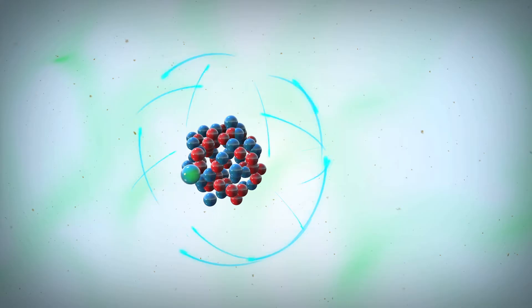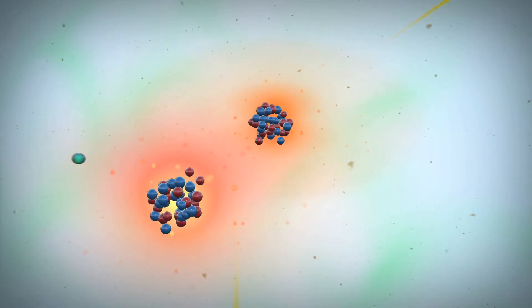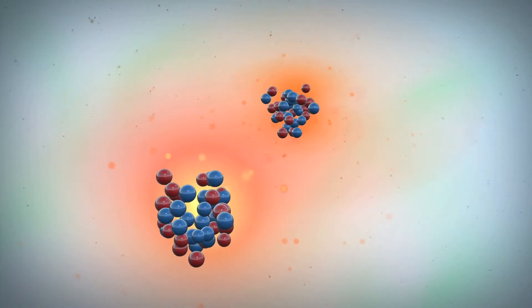When you split the uranium atom in half, you create two what we call fission products. Those can be highly radioactive, coming from the core of the reactor, actually inside the fuel bundle itself.